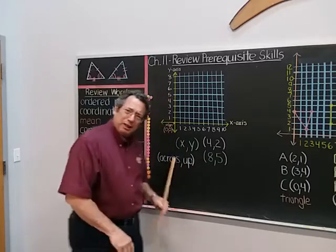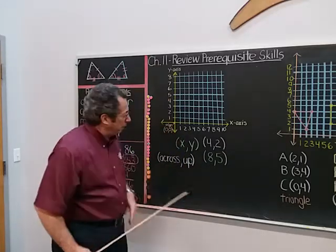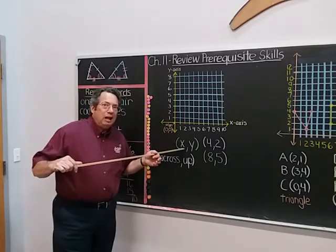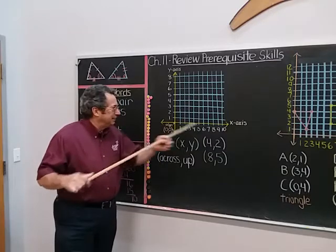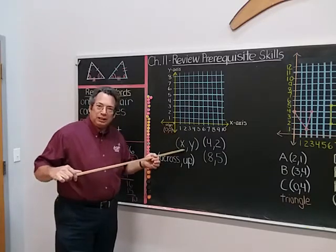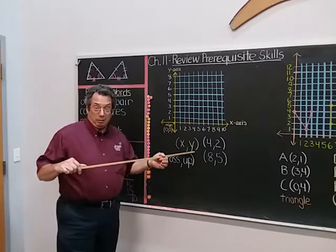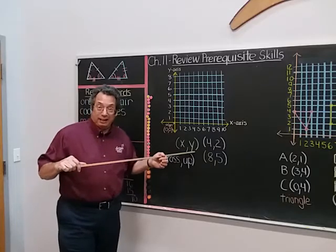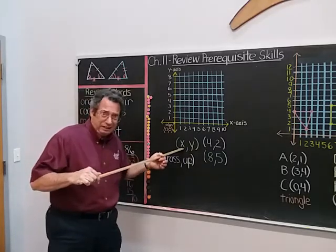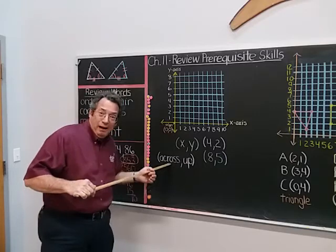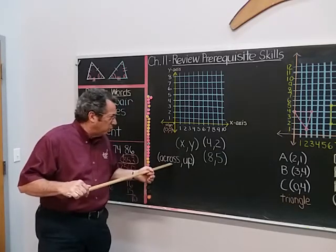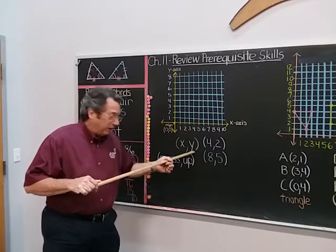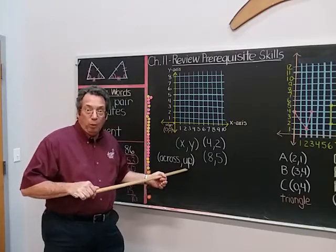A reminder about some things you're going to do in your practice — use graph paper. In the ordered pair, the first number, x, tells you how to move on the x-axis going this way. The second number tells you how to move on the y-axis. If they're positive numbers, the first number tells you how far to go across on the x-axis, and the y-axis number tells you how far to go up.